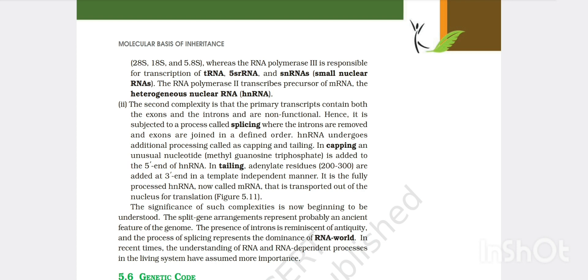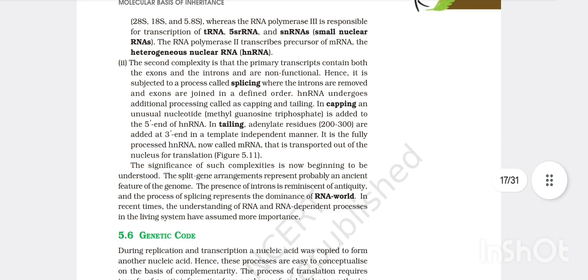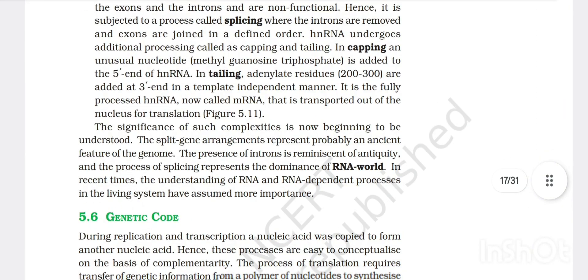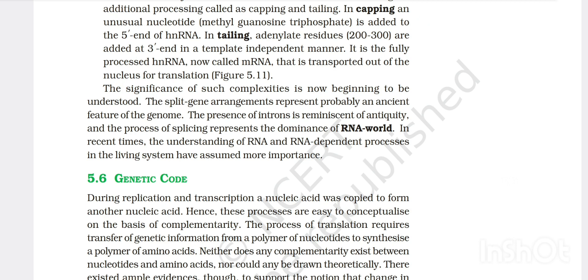There is a clear cut division of labor. RNA polymerase 1 transcribes the rRNAs, that is 28S, 18S and 5.8S. RNA polymerase 3 is responsible for transcription of tRNA and 5S rRNA and snRNA that is small nuclear RNAs. RNA polymerase 2 transcribes precursor of mRNA, the heterogeneous nuclear RNA. The second complexity is that primary transcript contains both exons and introns. The newly formed mRNA in the process of transcription in case of eukaryotes is heterogeneous nuclear RNA which contains both introns and exons. By the process of splicing introns are removed and exons are joined. This heterogeneous nuclear RNA undergoes additional processing called capping and tailing.